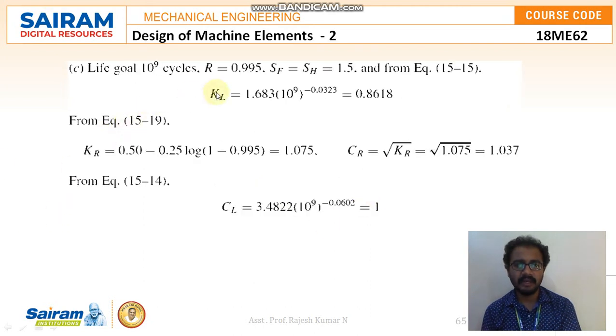And life goal, that is 10 power 9 cycle from the equation 15.15. The KL value I am getting as 1.68 into 10 power 9 of the value 0.0323. So KL value I am getting as 0.8618. Previously we assumed KL as 1. But in case of the wear and life cycle the values are different. Similarly KR value by using the formula, root of KR, so that is CR value. KR value I am getting as 1.075. And CR is nothing but root of KR, that is 1.037. And finally CL also we will be finding out with the known values. So the CL value I am getting as 1.